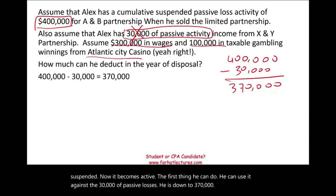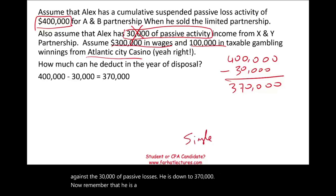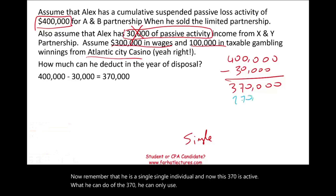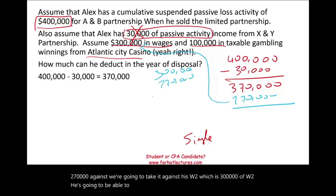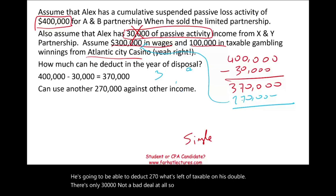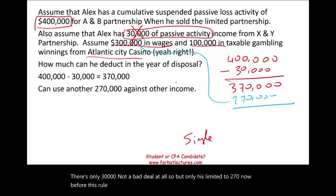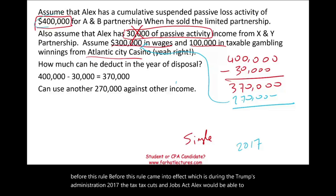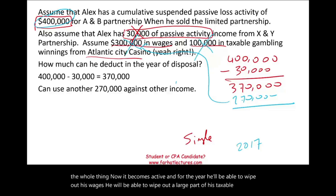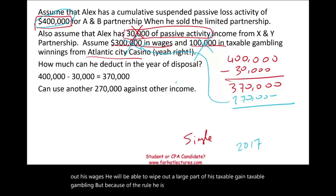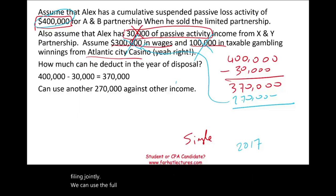Now, Alex is a single individual, and this $370,000 is active. Of the $370,000, he can only use $270,000 against his W-2 of $300,000. He'll be able to deduct $270,000, leaving only $30,000 taxable on his W-2. Before this rule came into effect during the 2017 Tax Cuts and Jobs Act, Alex would be able to deduct the whole thing — wiping out his wages and a large part of his taxable gambling income. But because of the EBLL rule, he's limited to $270,000. If he were married filing jointly, he could use the full amount and have essentially no taxes for that year.